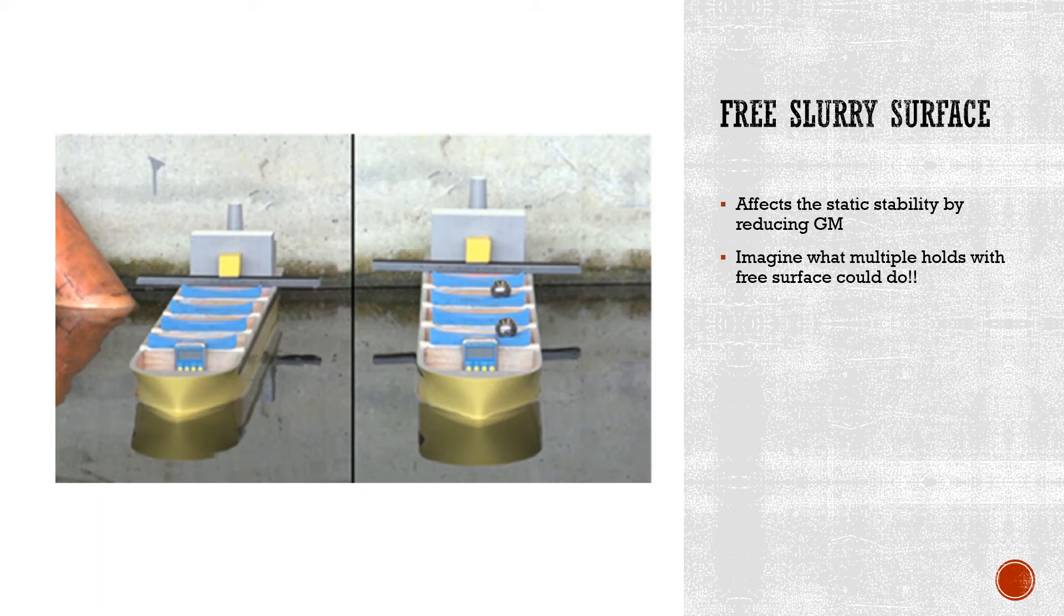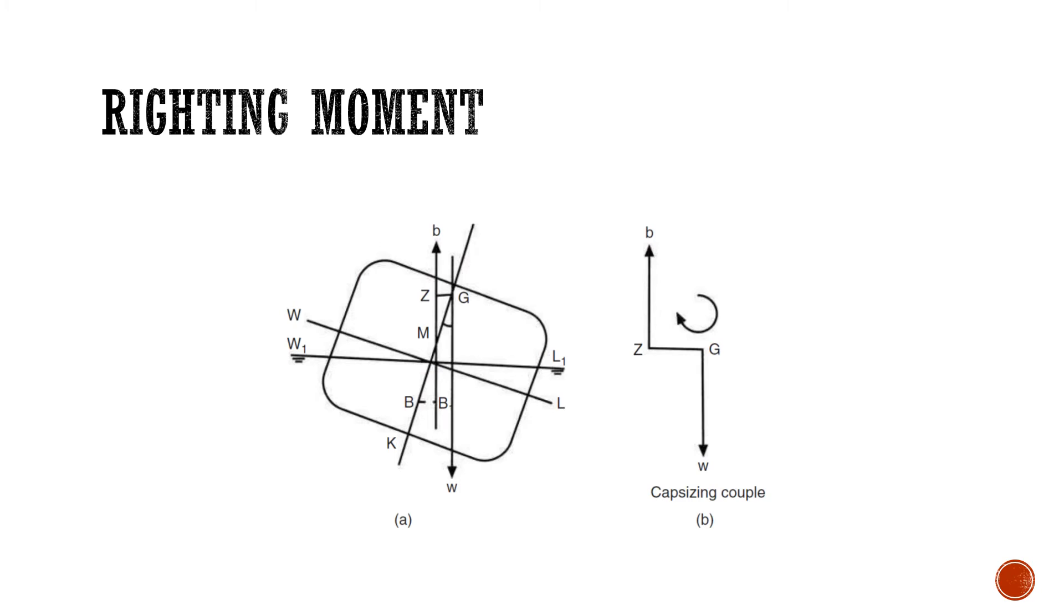These accounts point to a two-stage process of failure: the first being the steady development of a list, and the second being rapid capsizing. Any cargo instability due to moisture that arises should be able to explain the vessel's behavior. Under the classic liquefaction model this is difficult to explain, as the cargo liquefies and shifts during any rolling motion causing rapid capsizing. However, the dynamic separation phenomena with the formation of a free slurry effect can explain this two-stage process leading to vessel loss.